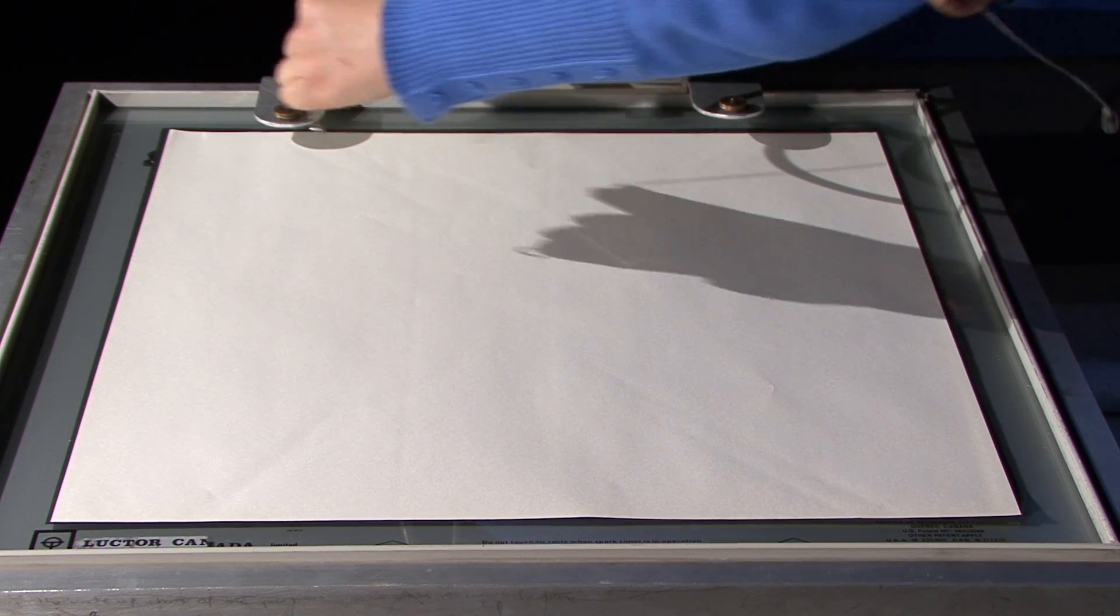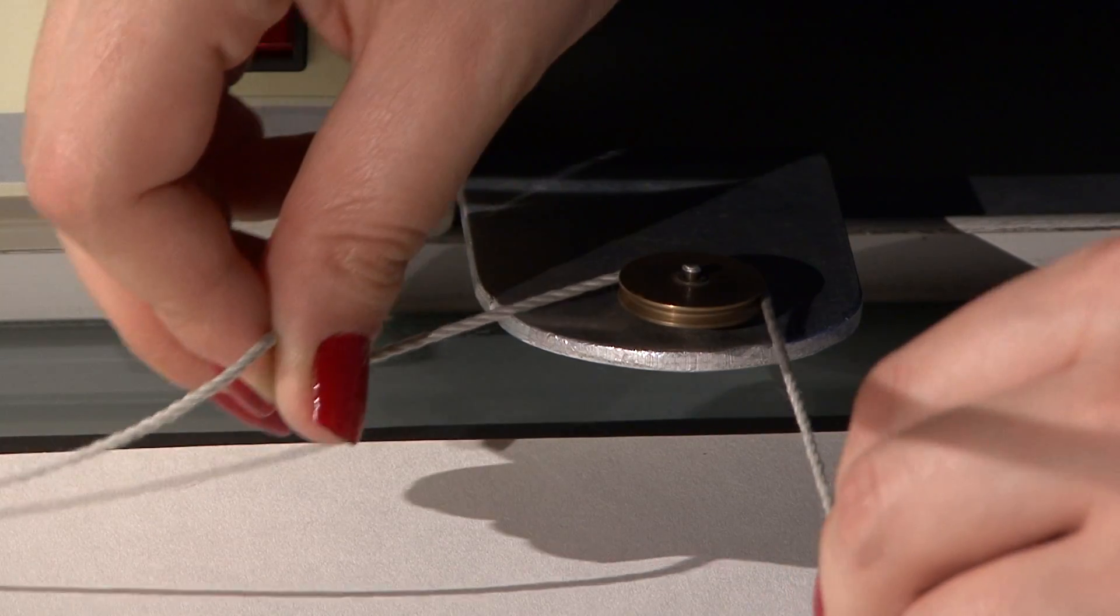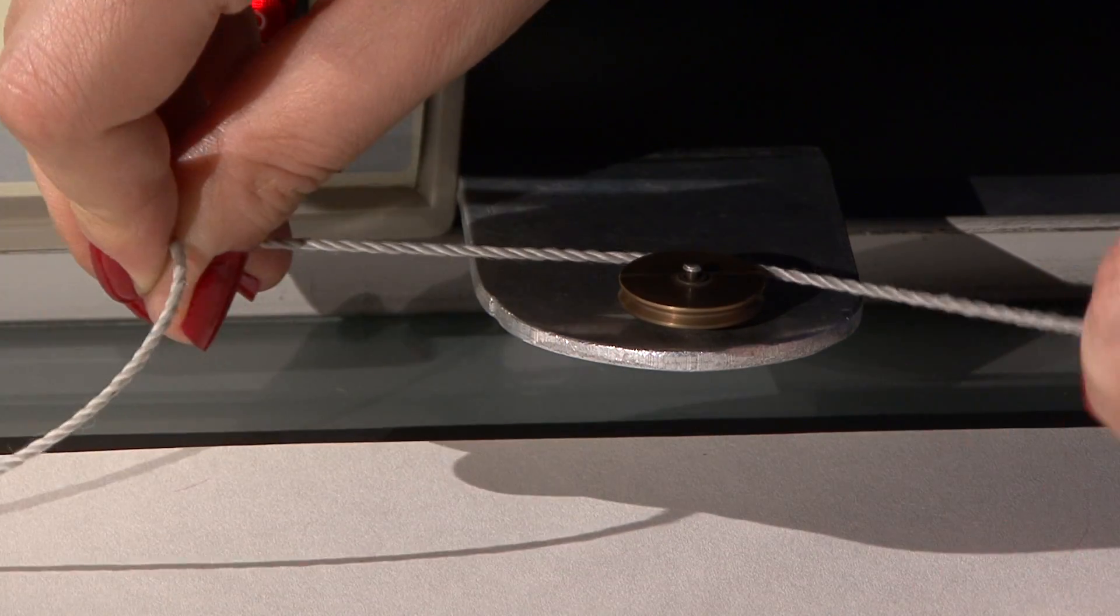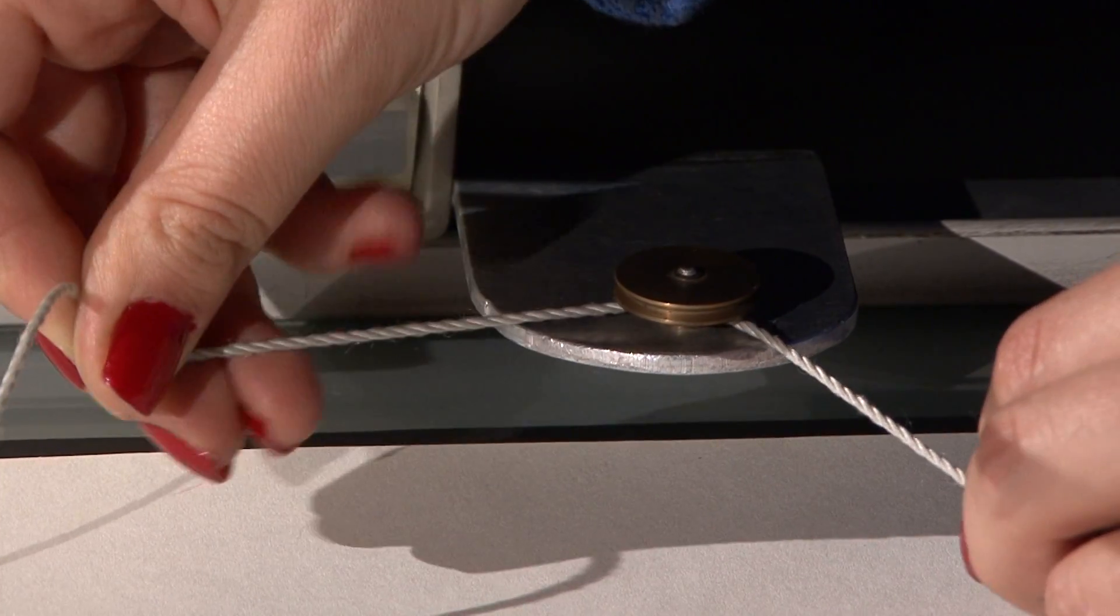Now, adjust the cord. The cord should be adjusted so that it can rotate the pulleys, but it should not escape from the pulleys.